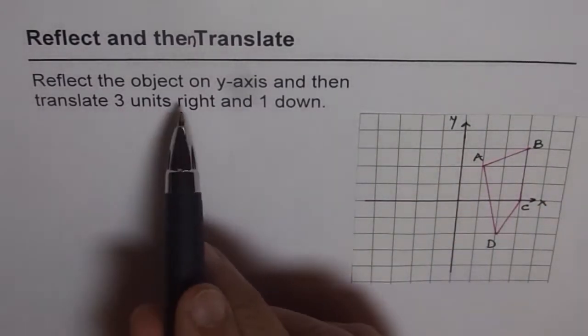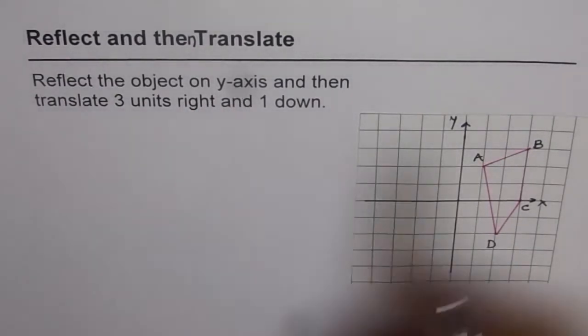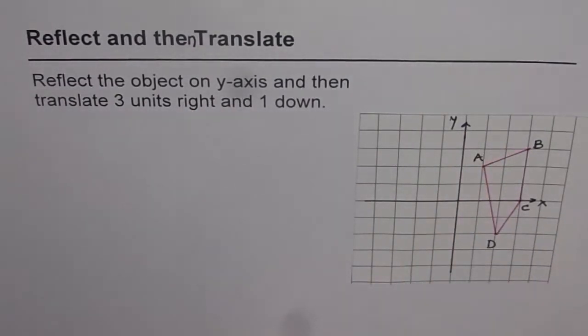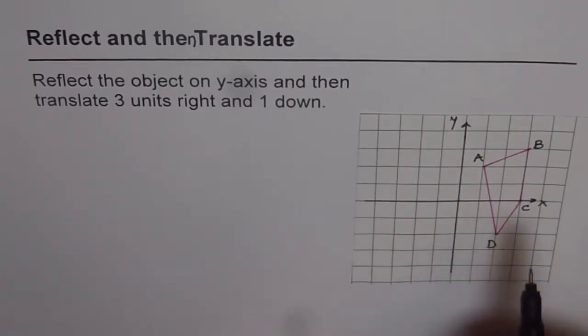Now we need to reflect this object on y-axis, that means the vertical axis, and then translate three units right, one down. I will do this in two different ways. First, let's see how we do it geometrically.